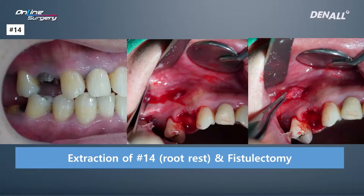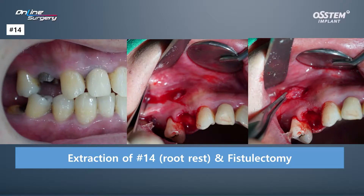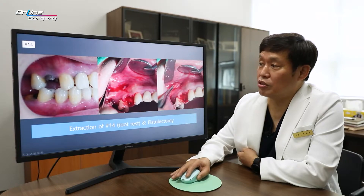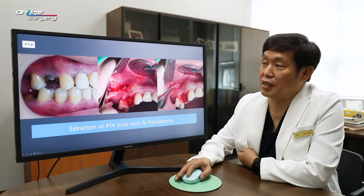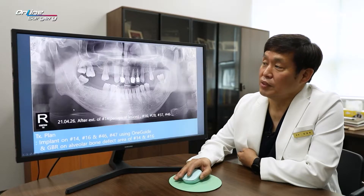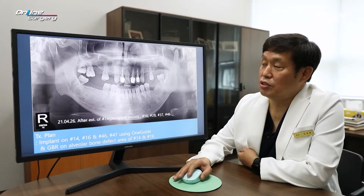In the case of No. 14, the root rest was extracted. After extraction on the buccal side, there was a small fistula. When removed, you can see that the fistula was connected to the alveolar bone, and granulation tissue was removed. The apex side of No. 14 showed quite severe alveolar destruction. After extraction, this is the panoramic image. Scaling as well as overall oral care was done.